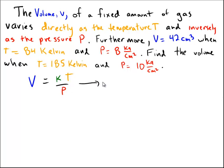Okay, now it tells us an initial condition. It tells us an initial volume or a fixed volume temperature and pressure that we can use to try to figure out what K is. So in this initial condition we have the volume is equal to 42, we have the constant K which is unknown, we have a temperature which is said to be 84, and then we have a pressure which is equal to 8. Now let's use this to try to solve for K.